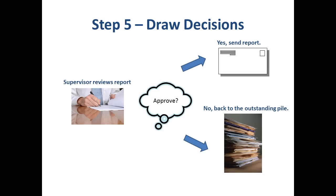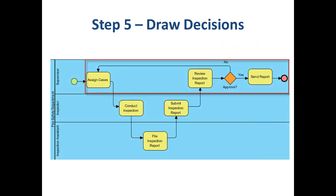In Step 5, we draw decisions. For example, after the supervisor reviews a report, he or she will decide whether to approve it. If approved, the next step is to send the report. If not, the case may return to the outstanding pile to queue up again. In BPMN, a diamond shape called a Gateway is used to represent a decision, so our decision tree will look like this, as shown inside the red rectangle.